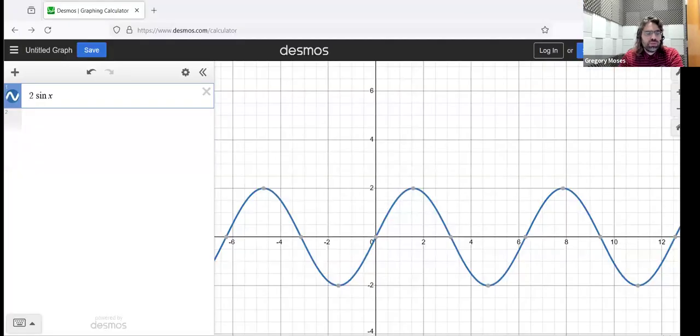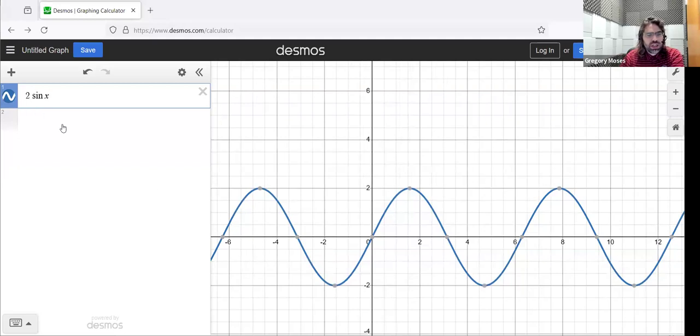So if we go to Desmos and look at a sinusoidal function, two times the sine of x. Well, the minimum value is negative two. Sorry. The maximum value is positive two. The distance between them is four. Half of that distance is two, and that two is the amplitude.